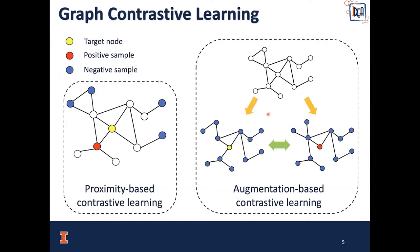Graph Contrastive Learning is a powerful tool to resolve the Graph Representation Learning problem. Traditional methods are based on proximity, where nodes that are close to each other are defined as positive samples, while nodes that are far away are defined as negative samples.